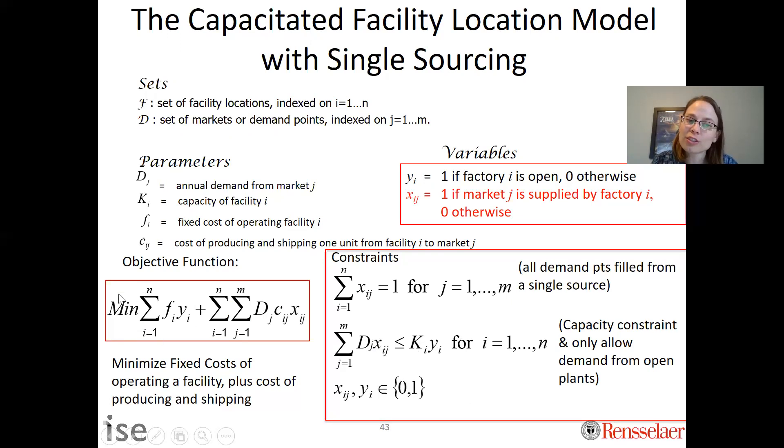The other thing that needs to change is in the objective function. The fixed charge part doesn't change, but again because x's are binary, not quantity, we need to incorporate dj into them. This is just an example of some tweaks we could do to the capacity facility location model, and there are other things you could think about tweaking in terms of model formulations.